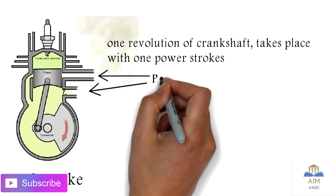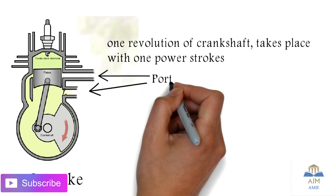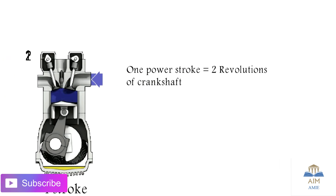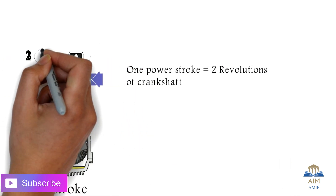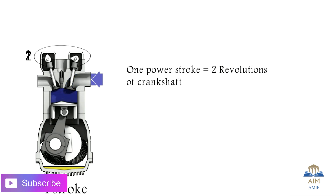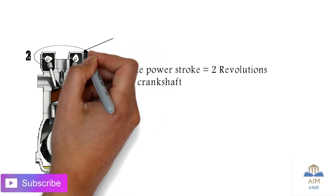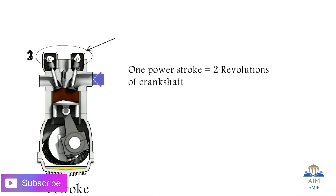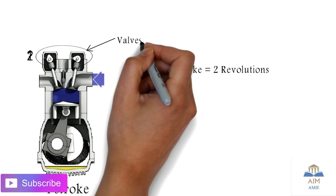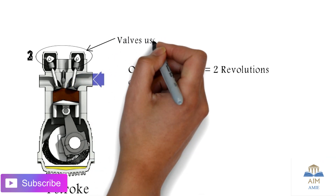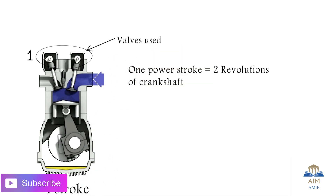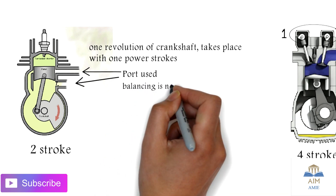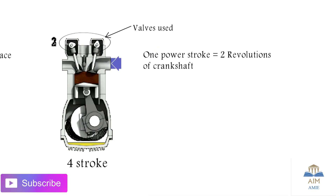In the two-stroke engine, ports are used — specifically inlet and outlet ports. In the case of the four-stroke engine, valves are used, and there is a complicated valve mechanism for both inlet and exhaust. So in four-stroke engines, valves are used instead of ports.